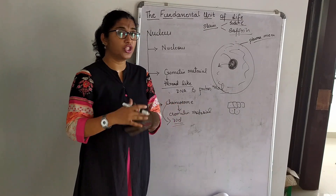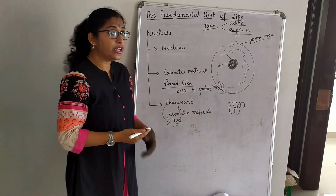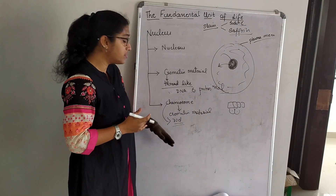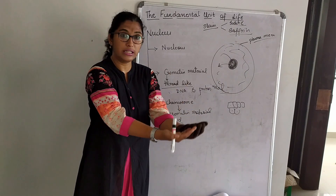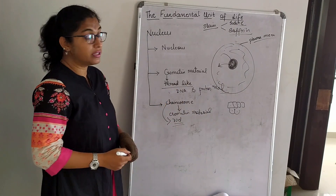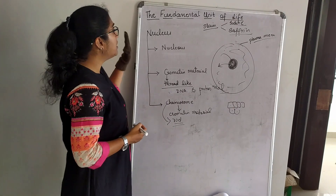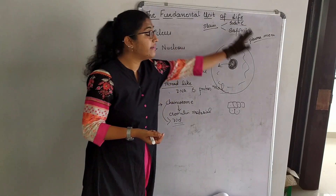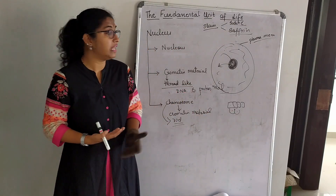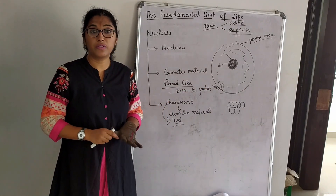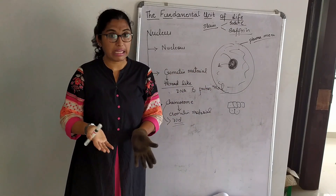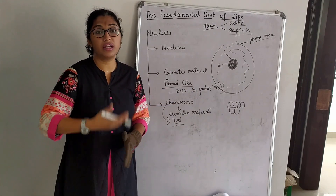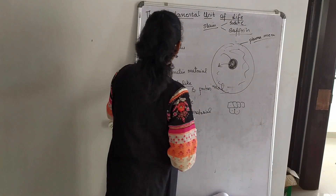Chromosomes contain chromatin material, which are rod-like structures that help in the inheritance of characters from parents to offspring. The main function of nucleus is that it controls all activities in the cell — structural and functional — which is why it is called the headquarter of the cell.